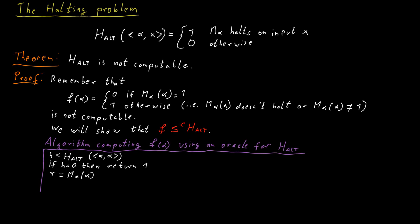And this terminates. We know this now. And we get some result. Let the result be R. Now we just check what R is. If R is equal to one, then we return zero because F(alpha) in that case should be zero. And otherwise we return one. So this is the entire algorithm.